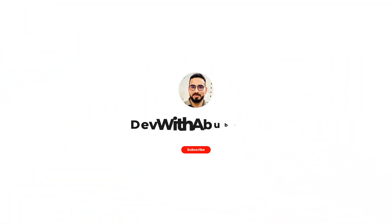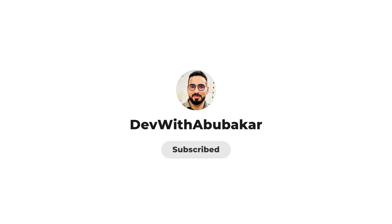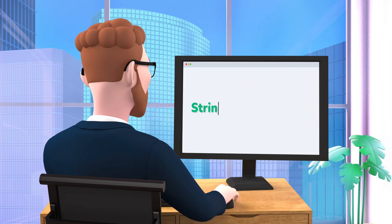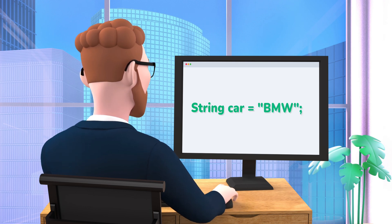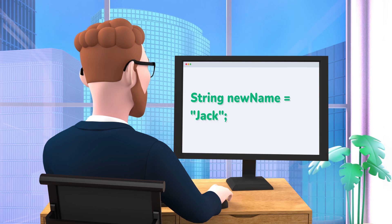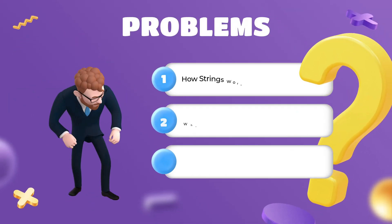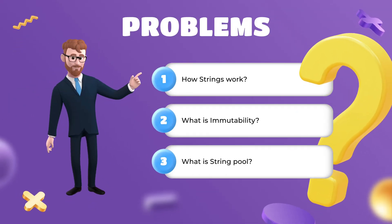Hey viewers, welcome back to another educational video. Today we are diving into the fascinating world of Java and strings, and we are making it super easy with the help of some cool animations. Meet Jack, our 3D animation buddy. He is taking us to his lab to explore how strings work in Java. Jack uses strings a lot in his coding adventure, but he is curious: how does Java handle them in its memory? The questions are: how does Java manage strings, what is immutability, and what exactly is a string pool? Let's learn together.